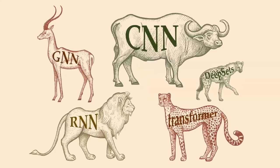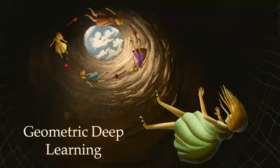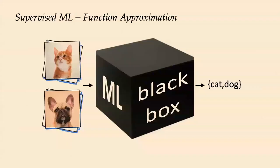In machine learning we also have an unhealthy zoo of different architectures derived historically for different types of problems: convolutional neural networks from computer vision and neuroscience, recurrent neural networks for sequences and temporal data, graph neural networks going back to computational chemistry, and so on. What we try to do in geometric deep learning is take a principled approach inspired by the Erlangen Program — arguing that all these architectures can be derived from an appropriate choice of geometric domain and associated symmetries.